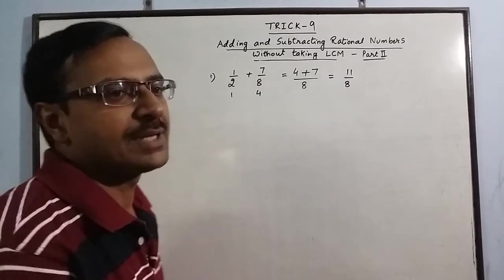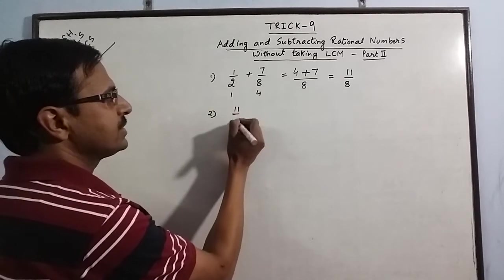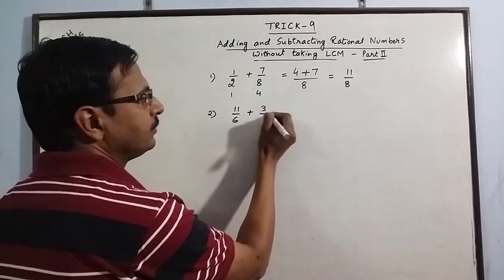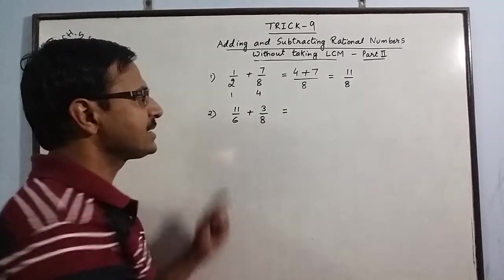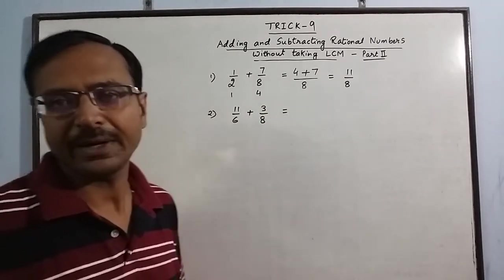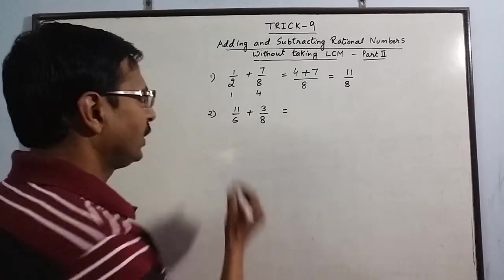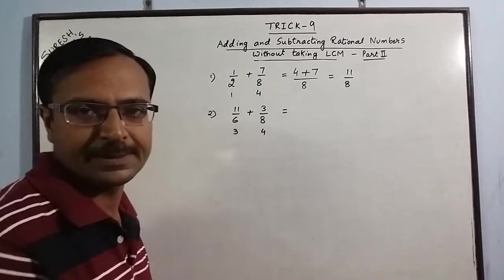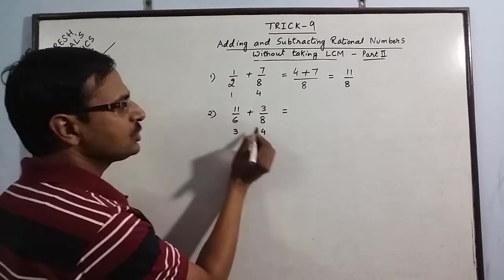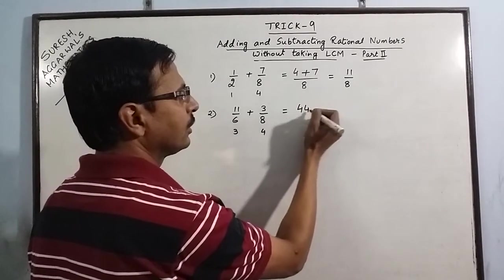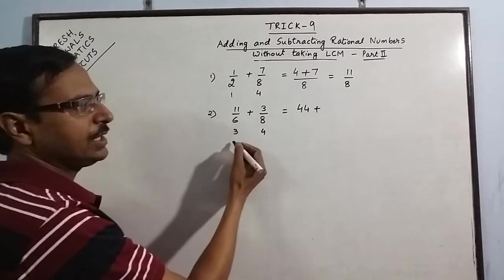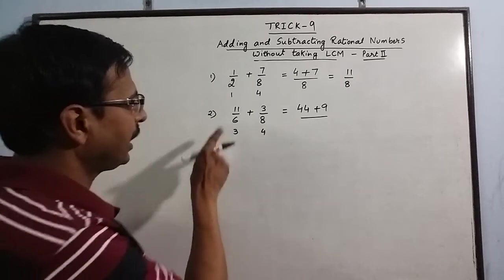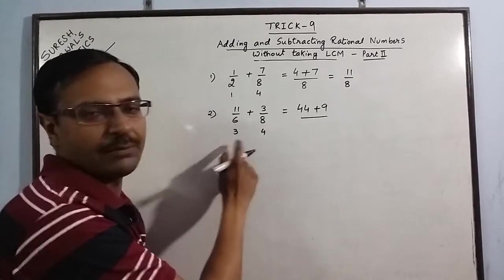Let us take one more example: 11 upon 6 plus 3 upon 8. Again, 6 and 8 have a common factor of 2 between them. 2, 3 the 6 and 2, 4 the 8. 11 into 4 is 44, 3 into 3 is 9, and the denominator is either 6 into 4, 24, or 8 into 3, 24. So the final answer is 53 upon 24.